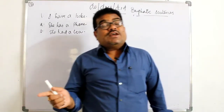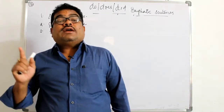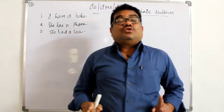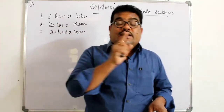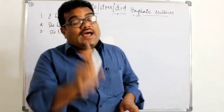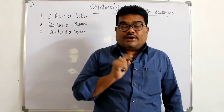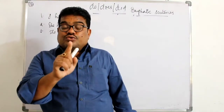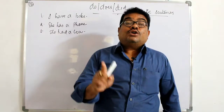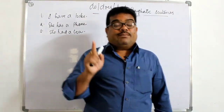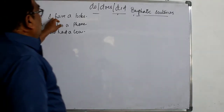Now, if has, have, or had is used as the main verb in a sentence, then to change it into an emphatic sentence we use do have, does have, or did have. You must note that after do, does, or did you must use 'have' — you must not use 'has' or 'had.'